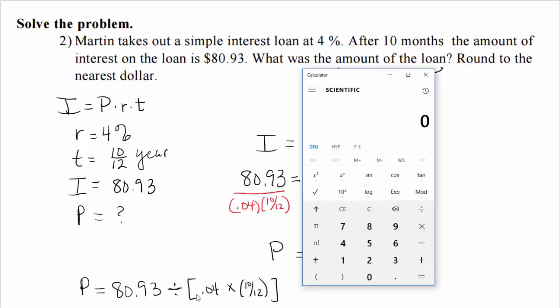On the calculator, enter: 80.93 ÷ ( 0.04 × ( 10 ÷ 12 ) ). Remember, a fraction is just division, so 10/12 becomes 10 ÷ 12. Close both sets of parentheses and hit equals.